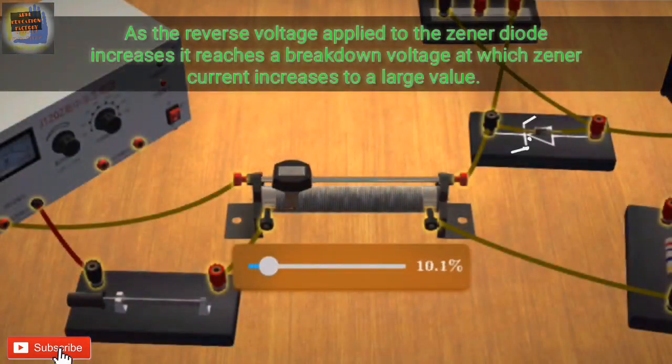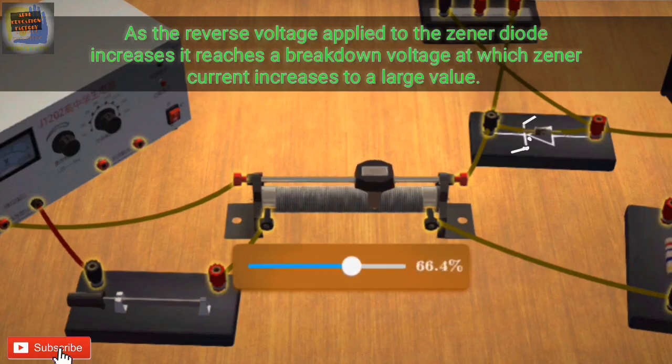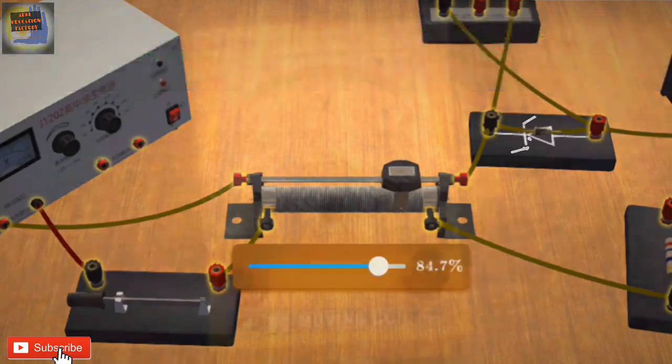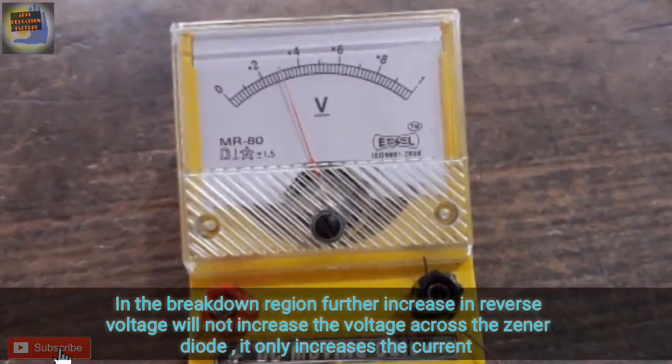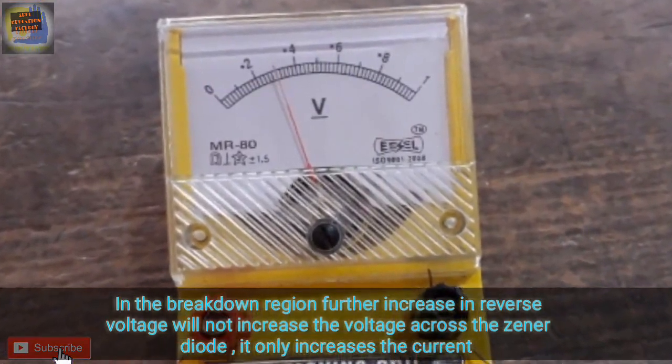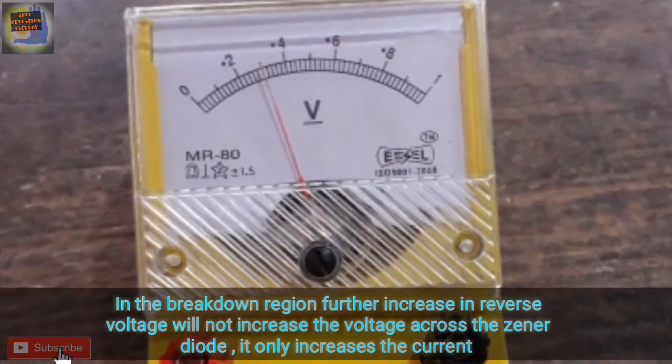As the reverse voltage applied to the Xenor diode increases, it reaches a breakdown voltage at which Xenor current increases to a large value. In the breakdown region, further increase in reverse voltage will not increase the voltage across the Xenor diode, it only increases the current.